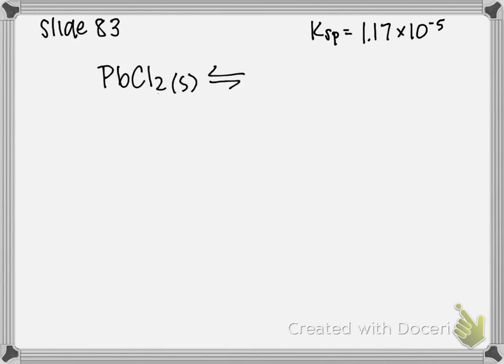So PbCl2 undergoes an equilibrium in water, which it dissolves to produce lead 2 plus ions, which are aqueous, plus 2 Cl minus ions. We produce 2 Cl minus ions because there are 2 chlorides in my original equation. So this is my equation that I'm going to be dealing with for my RICE chart.